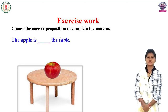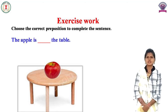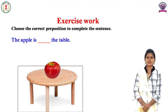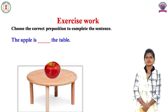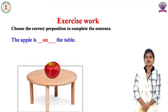Exercise 2 — choose the correct preposition to complete the sentence. इस exercise में आपको चित्र को देखते हुए preposition लगाकर sentence को complete करना है। चलिए देखते हैं। आपको picture में क्या दिखाई दे रहा है? Where is the apple? Apple कहाँ है? तो apple table पर है, तो यहाँ पर 'on' लगाएंगे। The apple is on the table.